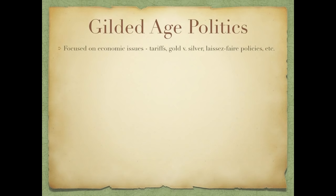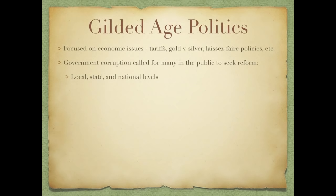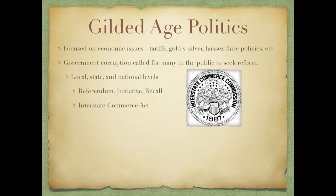Alright, Gilded Age politics focused on economic issues, including tariffs — remember, Republicans wanted to raise tariffs, Democrats wanted them lower. There was also the gold versus silver issue and the 16-to-1 ratio that William Jennings Bryan talked about. Much of the government focused on laissez-faire policies. Government corruption called for reform at local, state, and national levels, including the initiative, referendum, and recall, which became popular in Period 7. The Interstate Commerce Act was established to regulate railroads, though it was more symbolic at first.